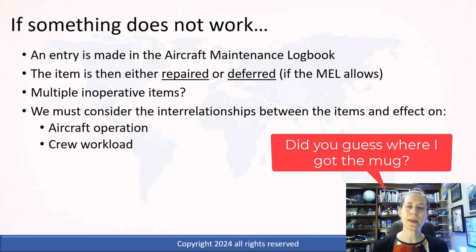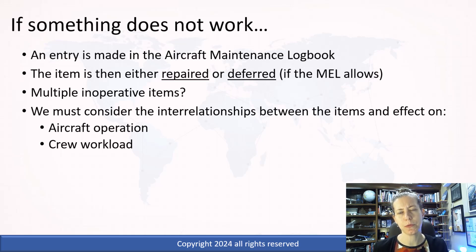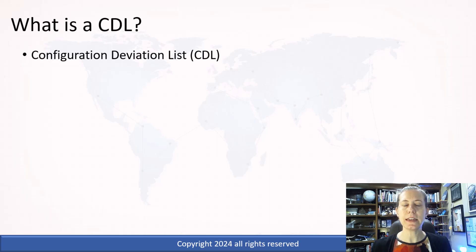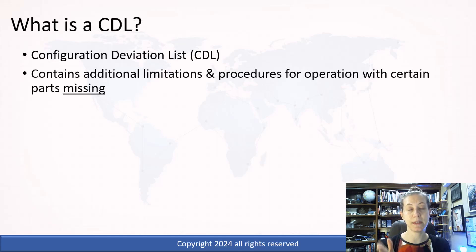So that is the minimum equipment list. I do have some examples coming, so pay attention because we're going to look at just a couple — briefly — at what they look like. Now the viewer also asked me to talk about CDLs. A CDL is a configuration deviation list.